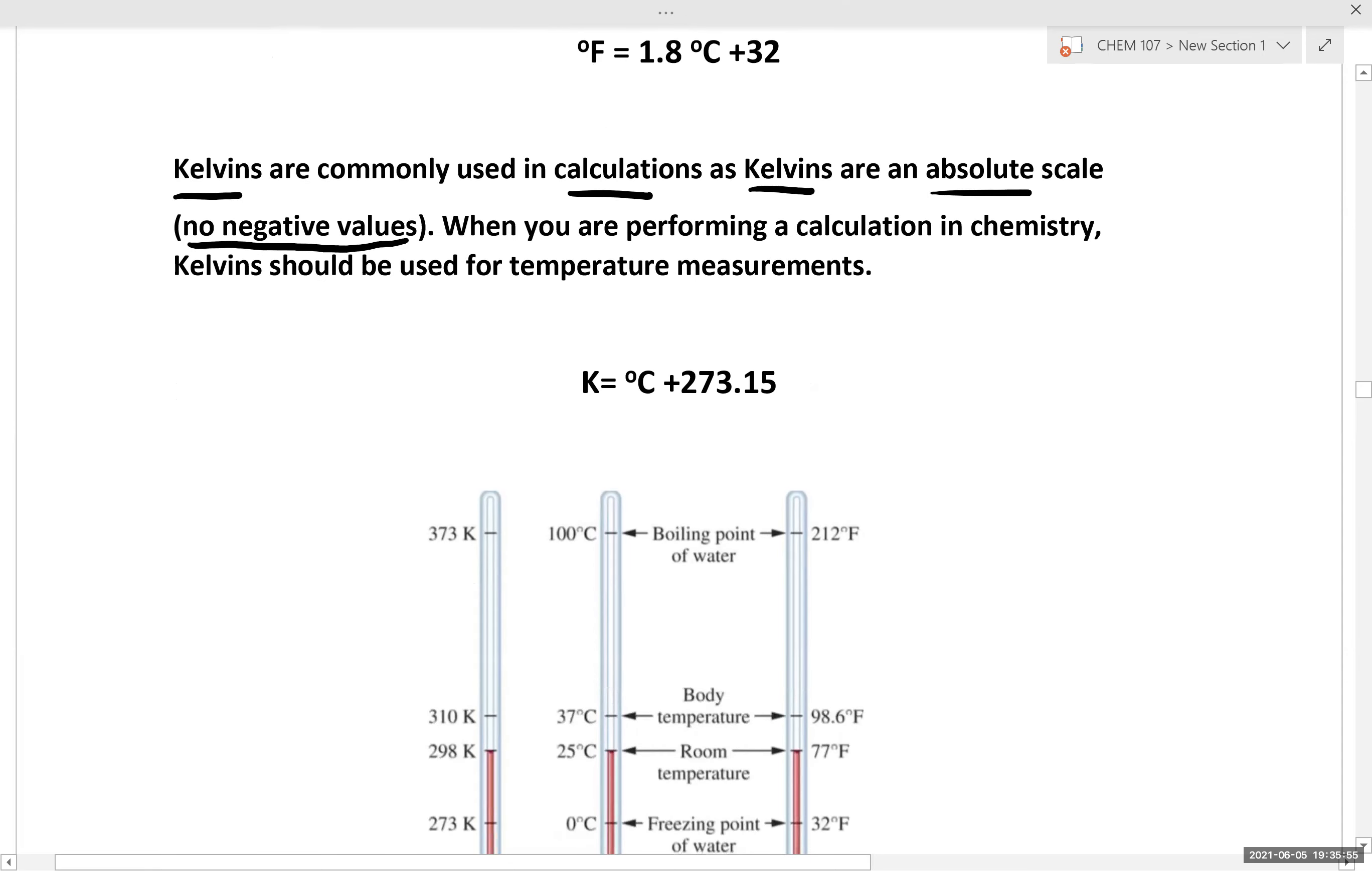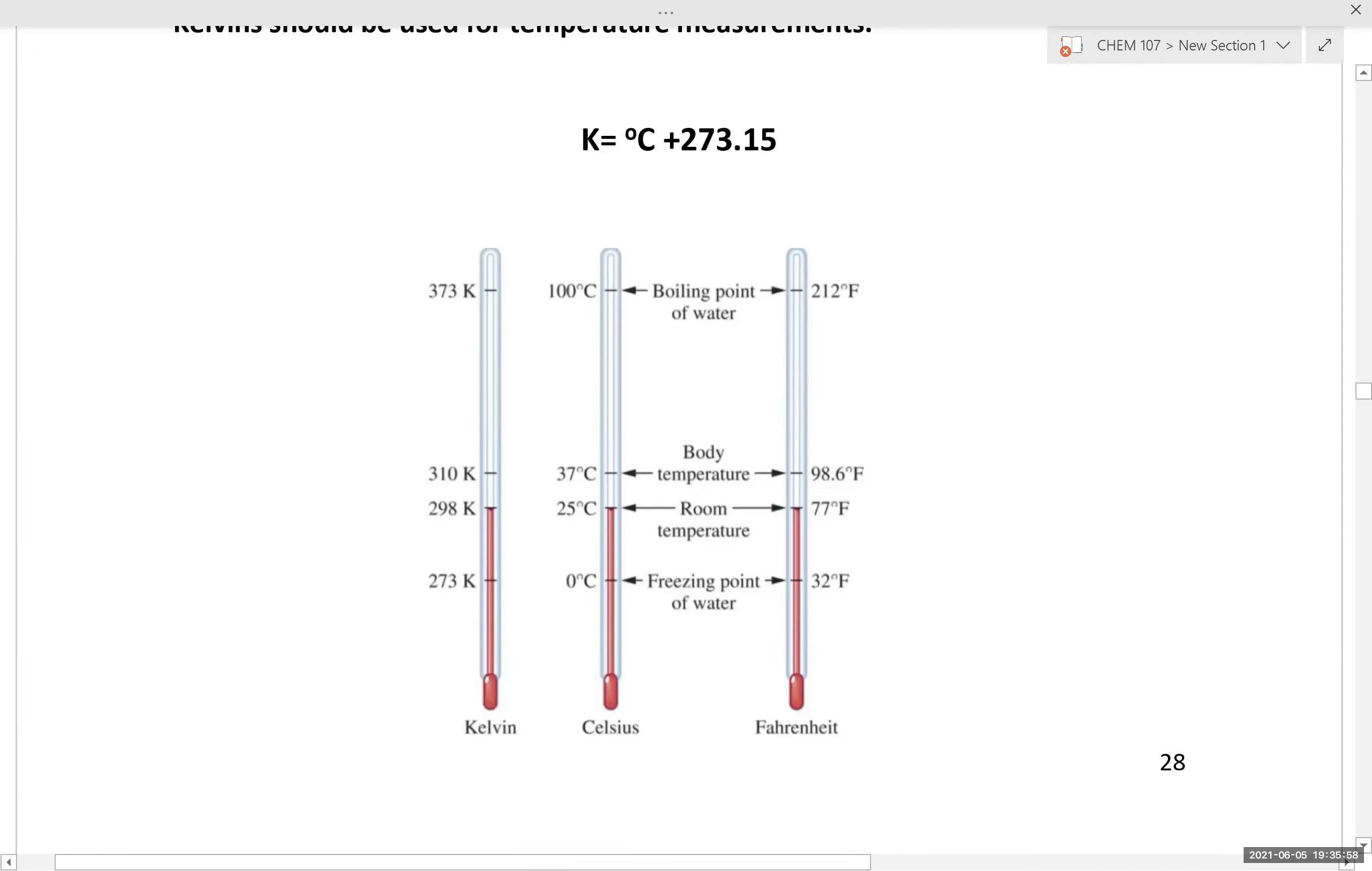To give you a sense of each of these temperature scales, we have Fahrenheit, Celsius, and Kelvin. We see that 100 degrees Celsius corresponds to 373 Kelvin, because 100 degrees Celsius plus 273 gives us 373 Kelvin. We also see that 100 degrees Celsius corresponds to 212 degrees Fahrenheit.